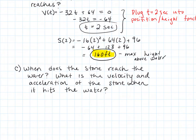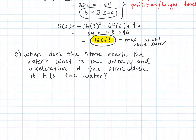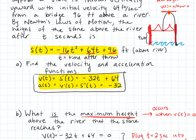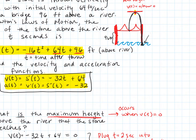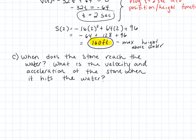Now let's answer the next question: when does the stone actually reach the water? The stone hits the water when the position equals zero, because the position function gives the height above the river. So we set s of t equal to zero: when s of t equals zero, the stone has zero height above the water.